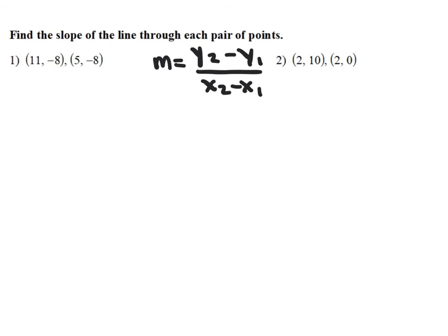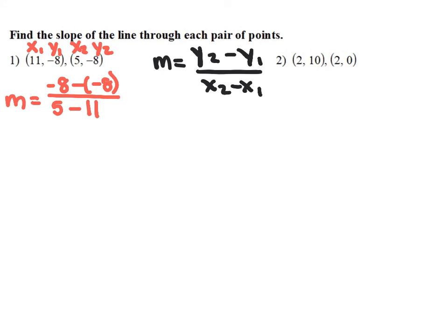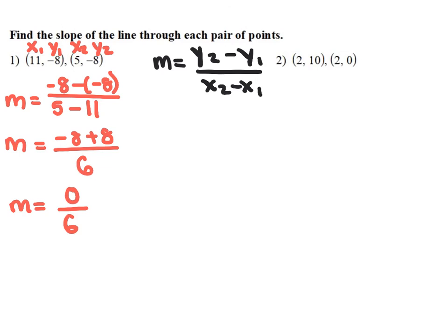In this example, we are again finding the slope through a pair of points. For number 1, I'm going to call the points x1, y1, x2, y2. Substituting into the slope formula: y2 minus y1 is negative 8 minus negative 8, over x2 minus x1, which is 5 minus 11. Negative 8 minus negative 8 becomes negative 8 plus 8, which is 0. And 5 minus 11 gives us negative 6. So we have 0 over negative 6, and the slope is 0.